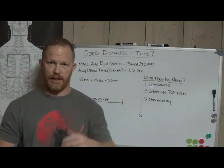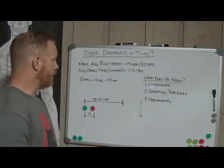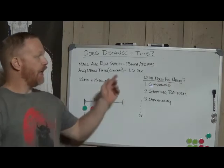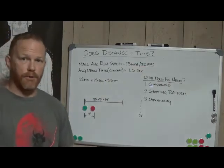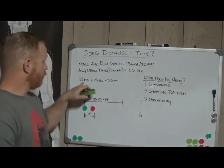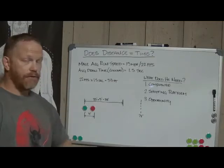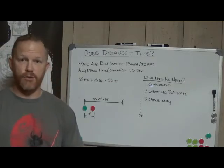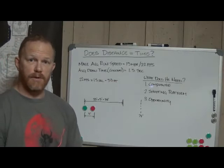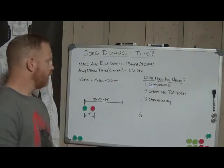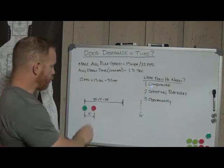So in a second and a half, how far could you get at 22 feet per second? Well, 22 feet per second for a second and a half, you could cover 33 feet of distance, which is basically a more realistic figure than the 21 foot rule.